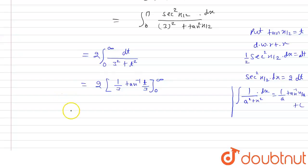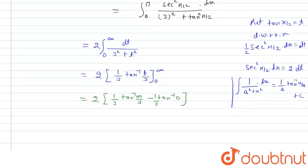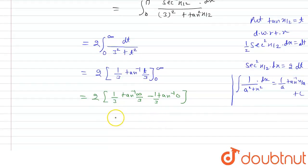Now put upper limit minus lower limit that is 2 times 1 by 3. So this will be tan inverse infinity minus tan inverse 0. Tan inverse infinity is pi by 2. So this will be equal to 2 times 1 by 3 times pi by 2 and tan 0 is 0, so this will be 0.